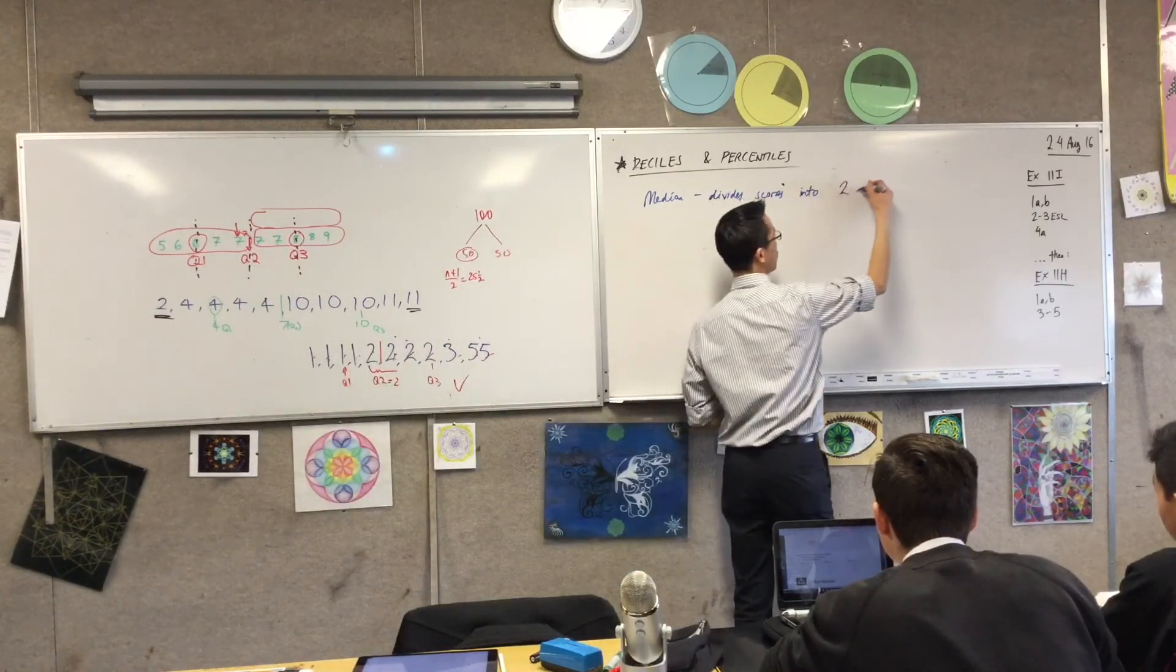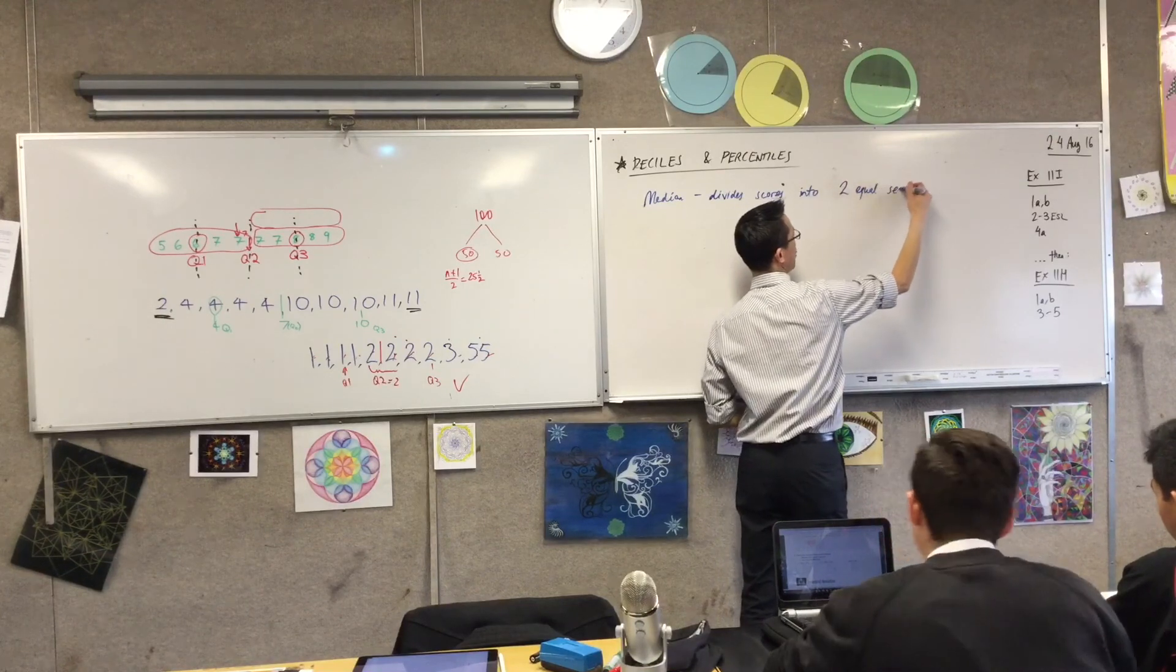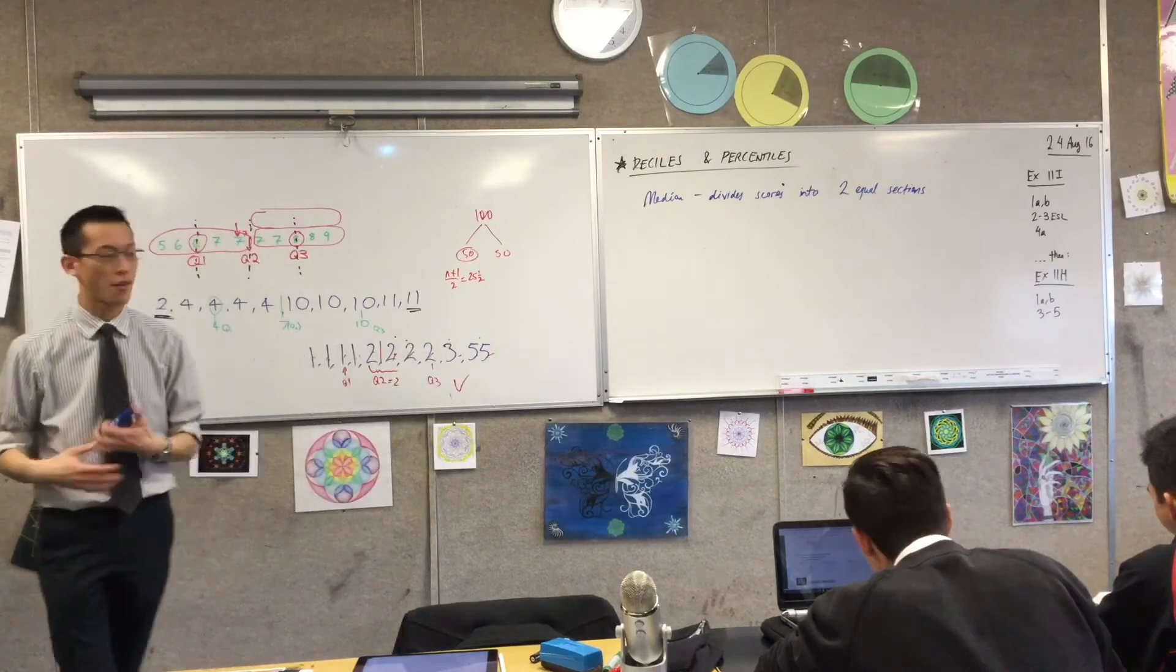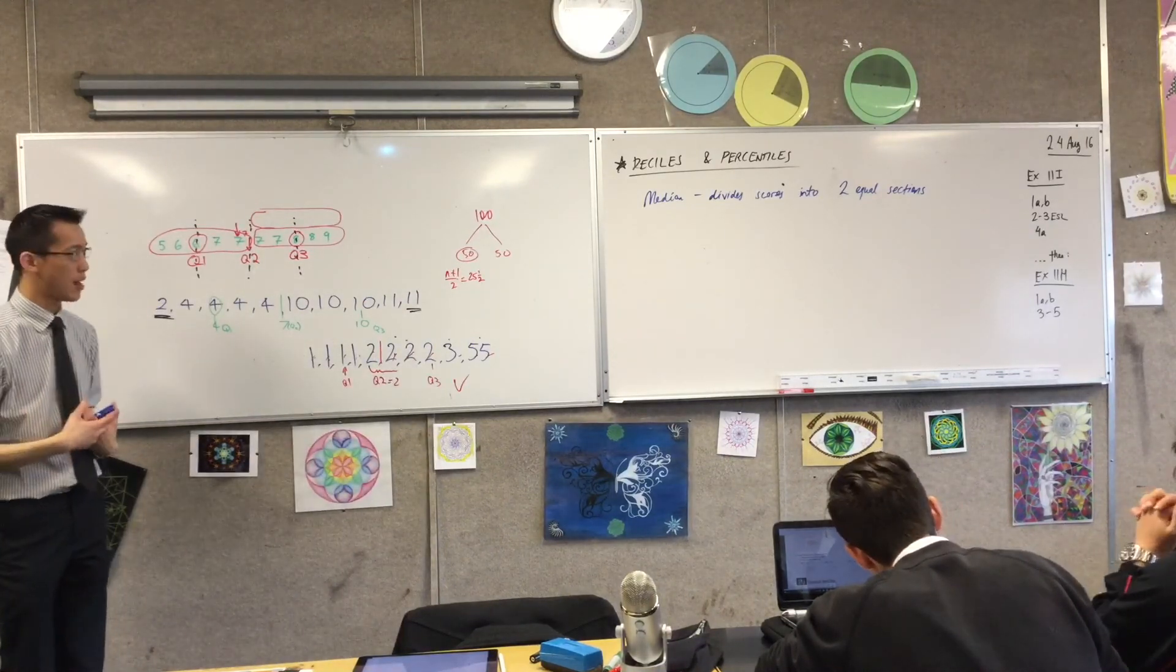In other words, it divides them right down the middle into an equal set, so into two equal sections. You have the bottom half, top half, and then the same size, the same number of people, scores, data points in both halves.